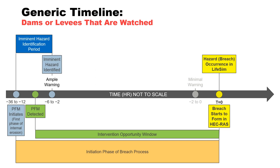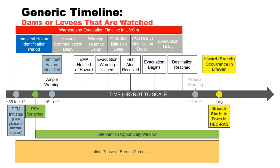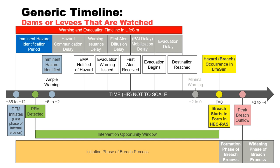Since these times are relative to time zero when the breach starts to form, they are also negative values. The time periods in the warning and evacuation timeline in LifeSim can move relative to each other and are unique to each emergency management agency. In a relative sense, an optimistic warning and evacuation scenario is shown, which begins prior to the start of breach formation. Whether or not a safe destination is reached by the mobilized population at risk depends on the evacuation speed and flood wave arrival time. Around the time when the peak breach outflow occurs is the completion of the formation phase of the breach process, after which the breach widens due to erosion of the breach sidewalls.